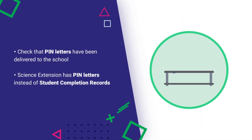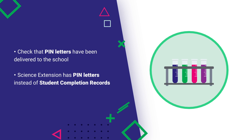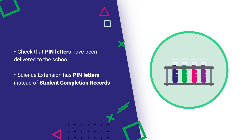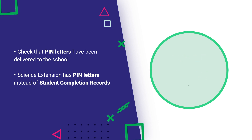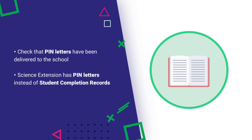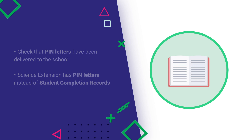You also need to check that the student pin letters have been delivered to the school. There are no student completion records for Science Extension. Instead, each student has a pin letter with their photo and student number, and the details and instructions for logging into the exam. The pin letters will be delivered to the school with the student completion records and other HSC stationery.